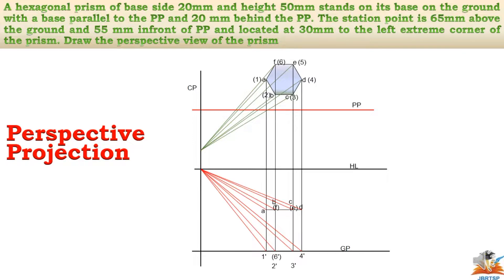Now the points which intersect the picture plane are marked: F6, A1, A5, 2, BD4, and 3C. Draw horizontal lines from these points and check for the intersection points — A' and A, B' and B, C' and C, and similarly up to F, and for the numerals 1, 2, 3, 4, 5, and 6.